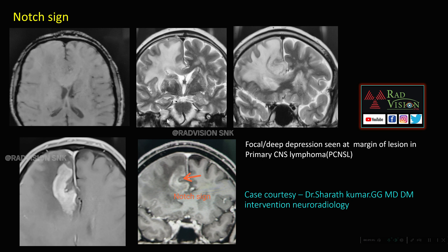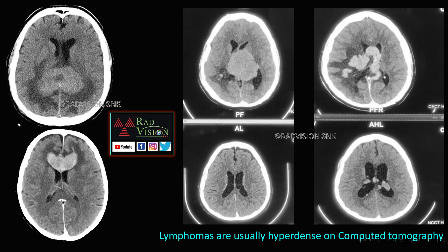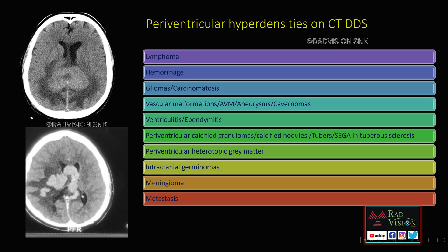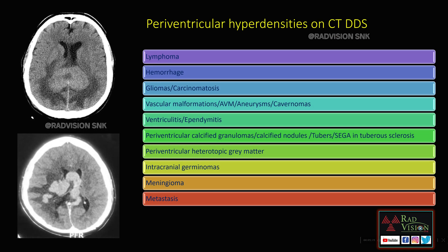Lymphomas are usually hyperdense on CT. Single lesions and multiple lesions are typically hyperdense on CT, in the periventricular location with subependymal spread. These hyperdense CT appearances may be mimicked by other lesions that can confuse the differential diagnosis of lymphoma.